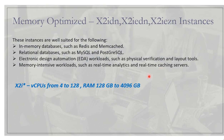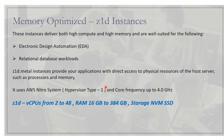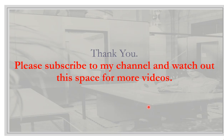The last memory optimized instance is the Z1d, suited for electronic design automation and relational database workloads. It also comes with a bare metal option — Z1d.metal — providing direct access to physical resources. It uses the AWS network system with core frequency up to 4.0 GHz, virtual CPUs from 2 to 48, RAM from 64 GB to 384 GB, and NVMe SSD storage. That covers memory optimized instances — please subscribe to the channel for more videos.